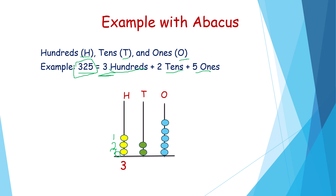In the tens place, how many beads should you draw? 2. Because in the tens place, number 2 is there. 1 and 2. And in the ones place, how many beads should you draw? 5. Because in the ones place, the number is 5. Count: 1, 2, 3, 4 and 5. Here is the 5.